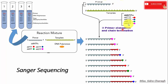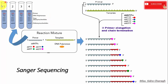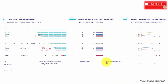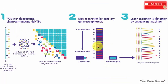A flanking primer binds to the region near the sequence of interest that we are going to read. Taq DNA polymerase then incorporates dNTPs along the DNA strand. Importantly, once DNA polymerase adds any of the four ddNTPs, chain extension is stopped or terminated. This termination process occurs across all four tubes, each for a different ddNTP.